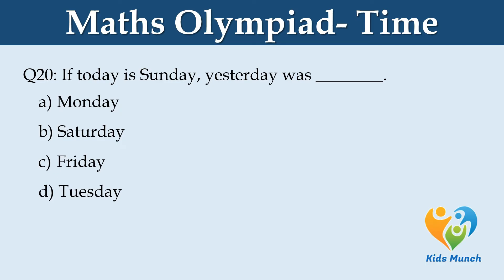If today is Sunday, yesterday was dash. Option A: Monday. Option B: Saturday. Option C: Friday. Option D: Tuesday.